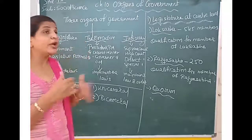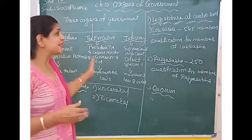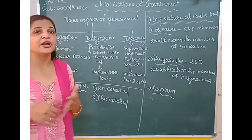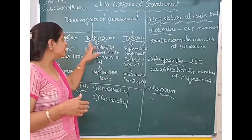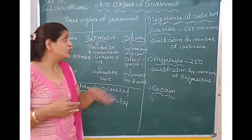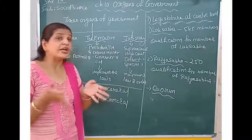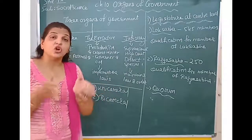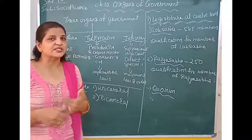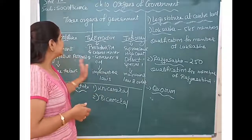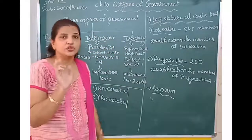The Executive implements the law. If the President has not signed a law, it will not become a law — it is the duty of the Executive to implement the law. The Judiciary maintains law and order. It ensures that the laws that are made are followed; otherwise it punishes the people. These are the three main organs of government: Legislative, Executive, and Judicial.